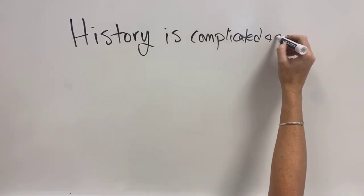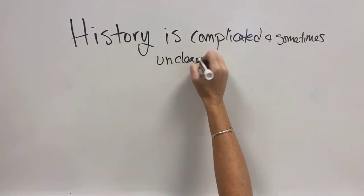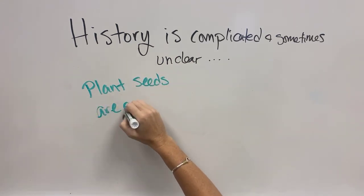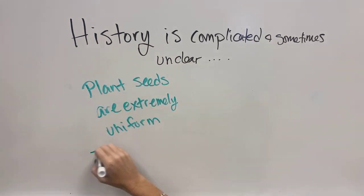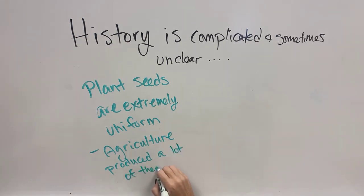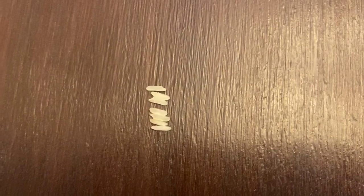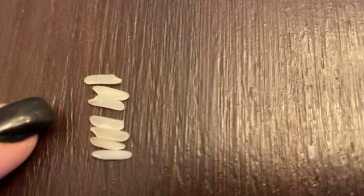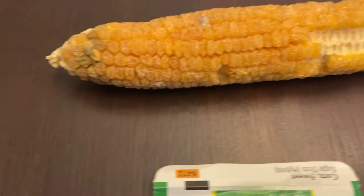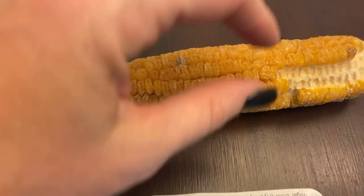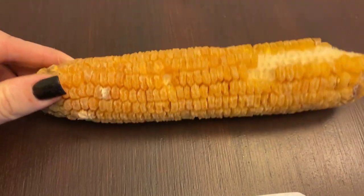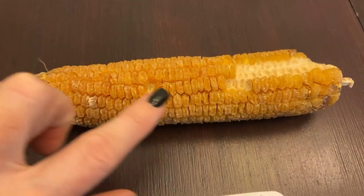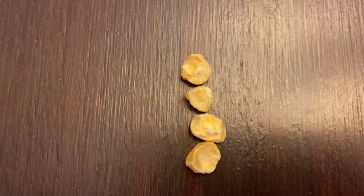When we look at the history of how we simplify this, it gets complicated and sometimes a little unclear. Interestingly, plant seeds are extremely uniform and agriculture produced a lot of them. Here you guys can see a bunch of grains of rice and they are crazy similar in size, extremely uniform. This is a piece of dried corn that you can take the individual kernels out of and then replant, and each of those kernels of corn will grow into a new corn plant. If you were to go buy them, the seeds look like this — again, surprisingly uniform.